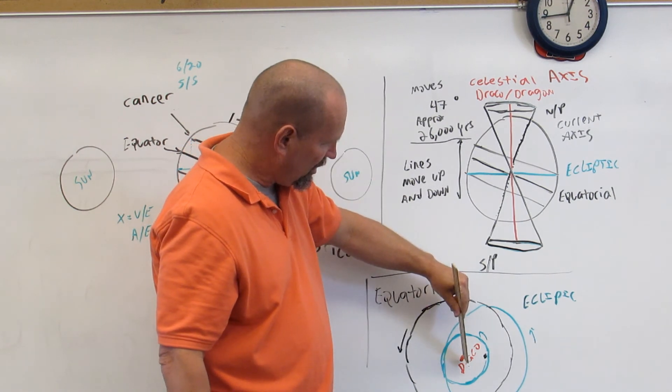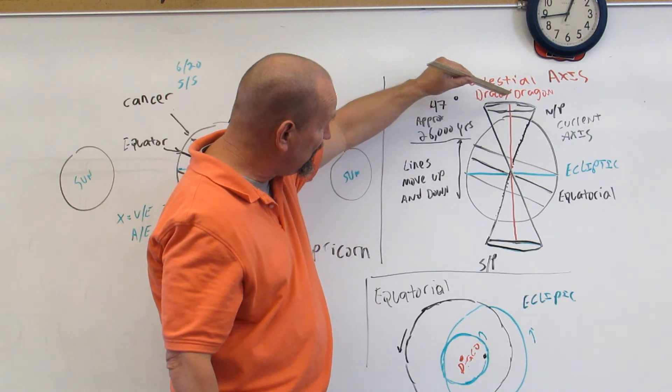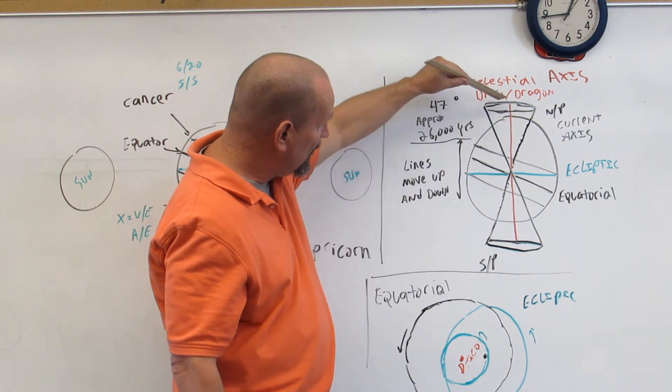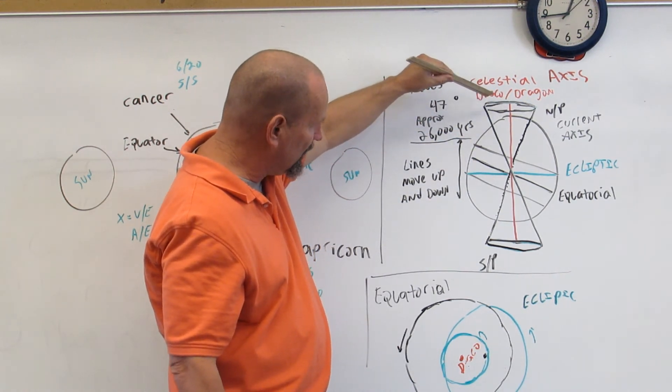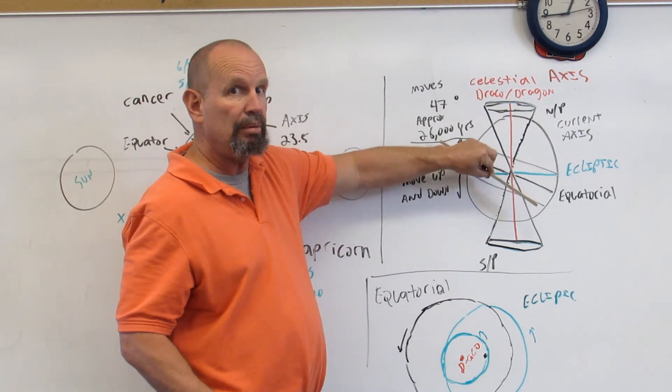And here's your celestial axis point. This will move up across the celestial axis and over to this side over here. And as a result of that, all of these lines tend to move up and down.